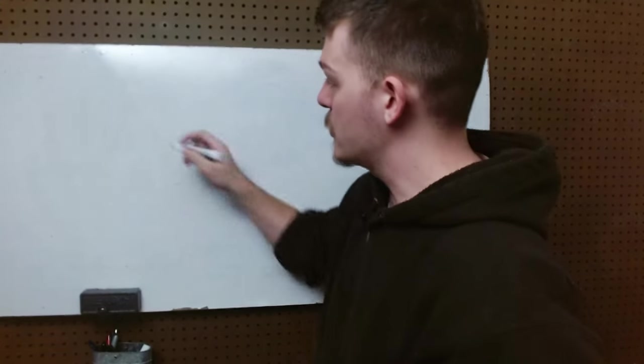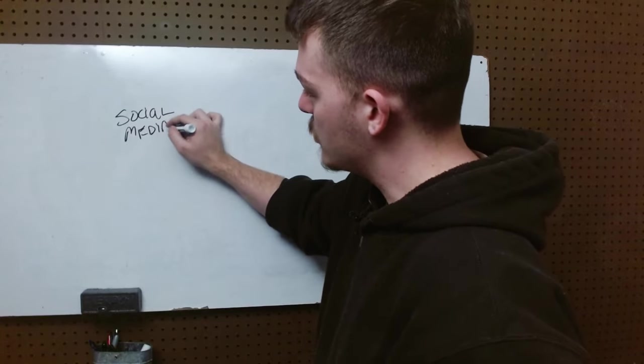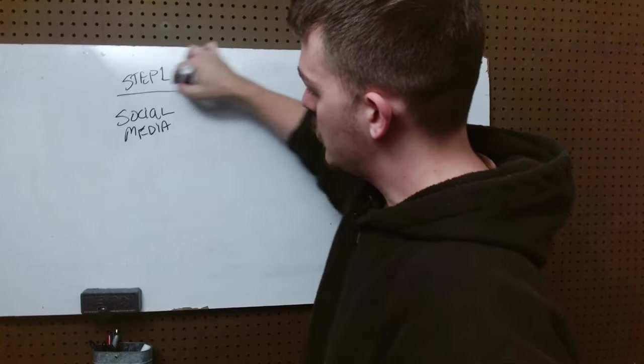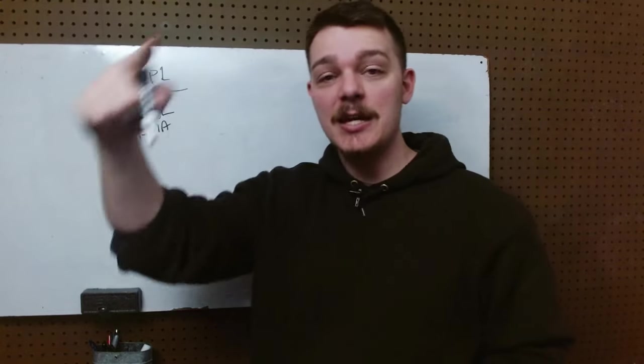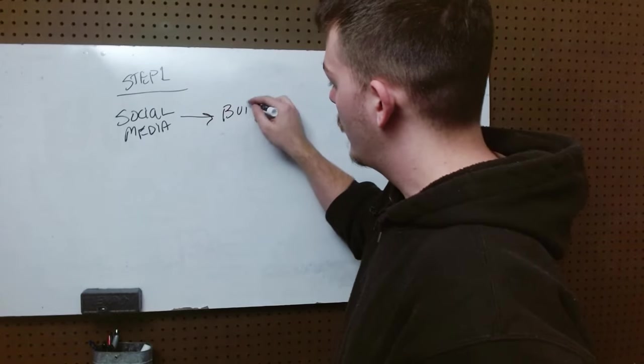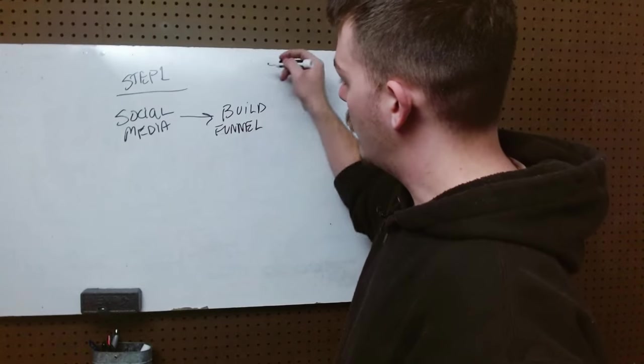So you have this idea in the morning. You post it out on social media. So that's the first idea. The first thing to do, step one, is go to social media and validate your idea. Once you validate your idea, you build the funnel. Step two.